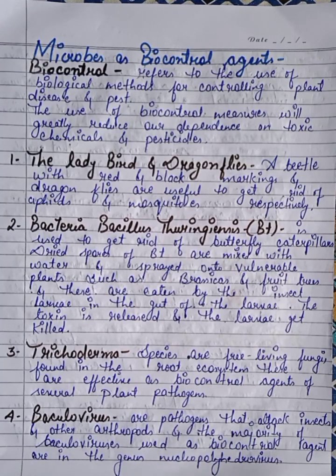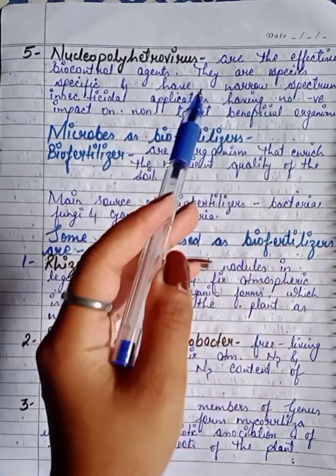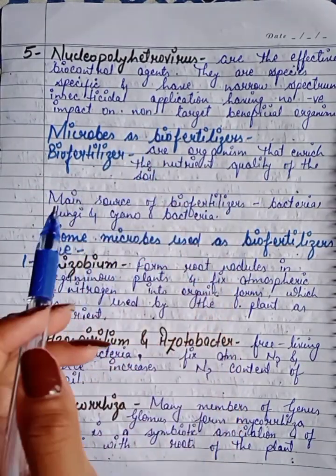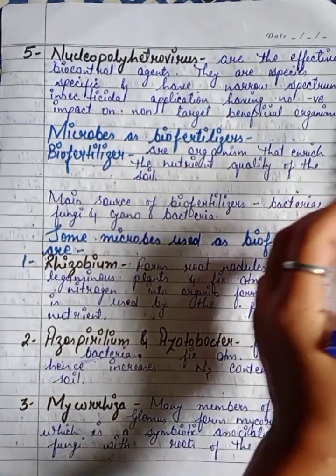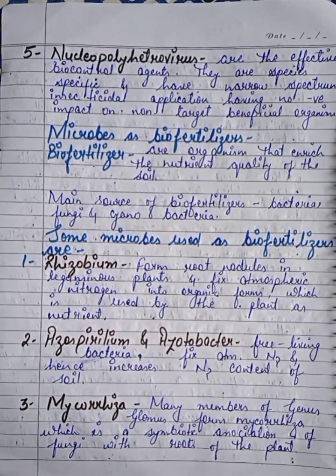Fourth is Bacillovirus — a pathogen that attacks insects and other arthropods. The majority of bacilloviruses used as biocontrol agents are in the genus Nucleopolyhedrovirus. These are effective biocontrol agents that are species-specific, with a narrow spectrum of insecticidal application, and have no negative effect on non-target beneficial organisms.